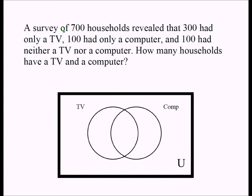The survey total of 700 households should be the sum of the four regions in the diagram. Whenever two circles overlap, four regions are created: households that own only a TV but not a computer, households that own only a computer but not a TV, households that have both, and households that have neither. You want to understand those subtle things before you can understand the rest of the problem.